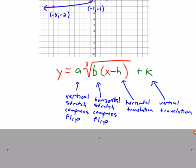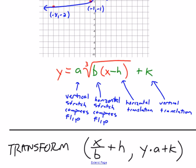Once you get your parent points, your starting points, you perform your transformations by taking each x from the parent point and dividing by b and adding h, and then doing y times a plus k.